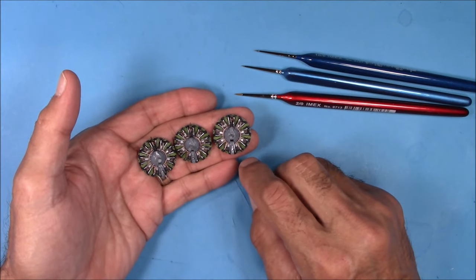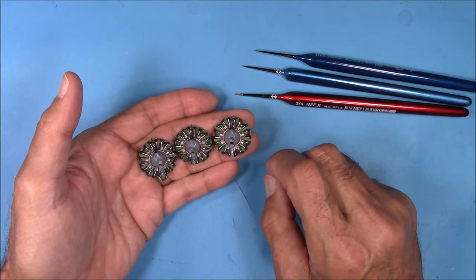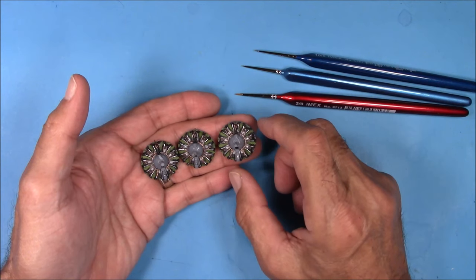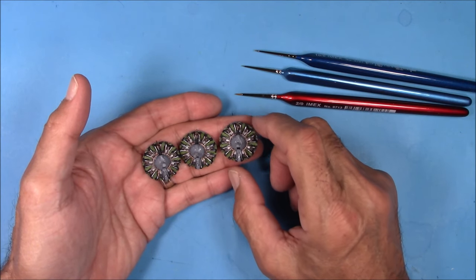I do have a video on painting the 3D printed R2600s that I did for my 1:48 scale B-25J. But these came out pretty good. Now, to tone it down, all you have to do is hit it with some clear flat and you can see the difference.